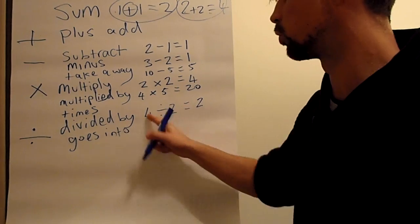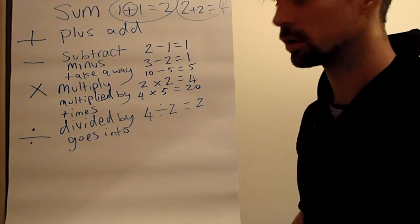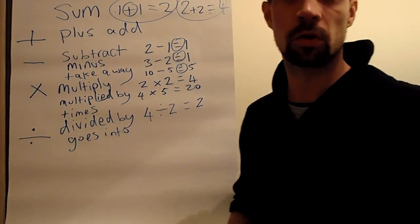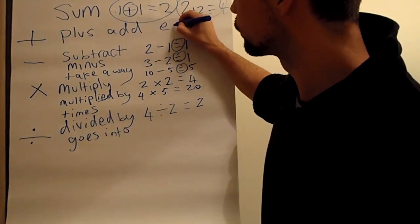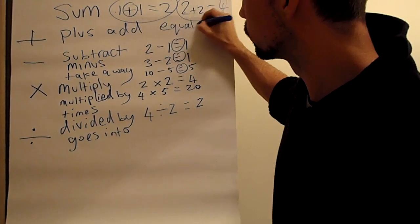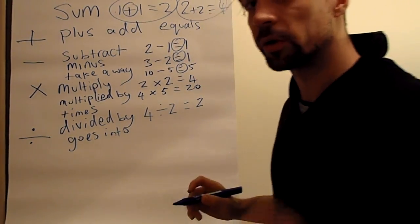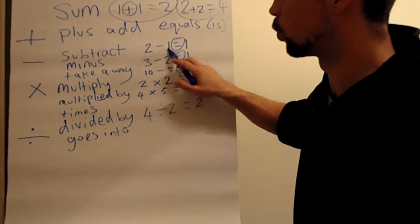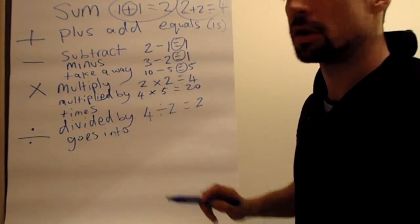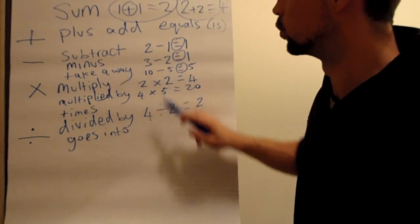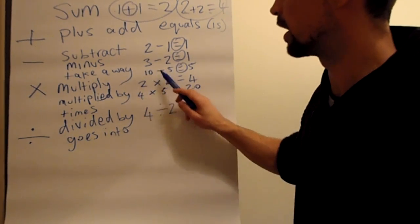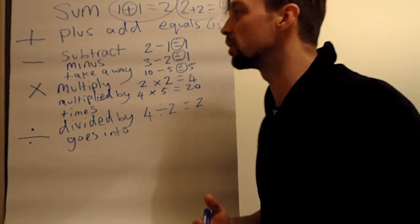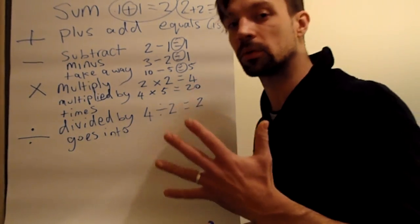The other symbol is this one, and this is called equals. Also it's called is. 2 minus 1 is 1, 3 subtract 2 is 1, 10 take away 5 is 5.